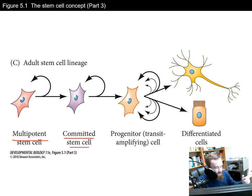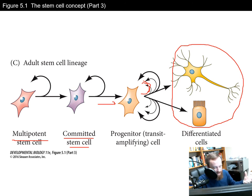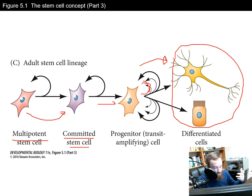From there, they progress to become progenitor cells, also called transit amplifying cells. These are cells that are pretty committed to becoming a certain tissue — in this case, two different types of nervous system cells. They increase the numbers of cells in that tissue by amplifying themselves over and over again. These progenitor cells are transient, so they don't stay around forever, but while they are around they amplify multiple times and then differentiate into the finalized cell type. So the process goes from multipotent, which is most flexible, to committed, which is less flexible, to progenitor, which is tissue specific and can amplify greatly.